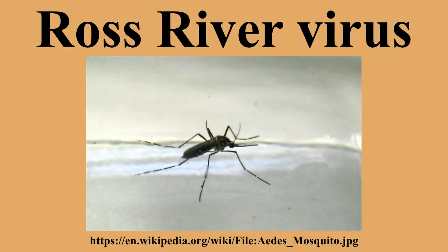The largest ever outbreak of the virus was in 1979-1980 and occurred in the Western Pacific. The outbreak involved the islands of Fiji, Samoa, the Cook Islands, and New Caledonia. RRV was later isolated in humans following a series of epidemic polyarthritis outbreaks in Fiji, Samoa, and the Cook Islands during 1979.